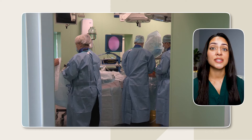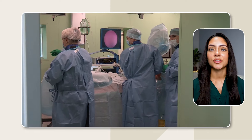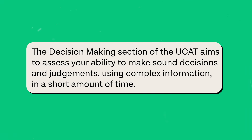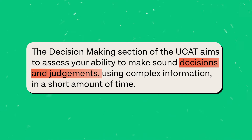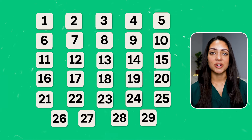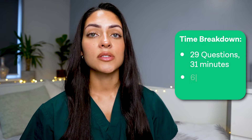As you can imagine, doctors and dentists will have to make quick decisions in stressful situations or high pressure environments. And that is exactly what the decision making section of the UCAT exam is assessing — your ability to make sound decisions and judgements using complex information in a short amount of time. This section has 29 questions which need to be answered in 31 minutes, giving you about 64 seconds per question.